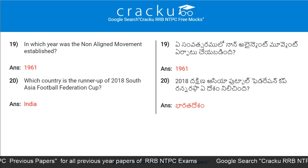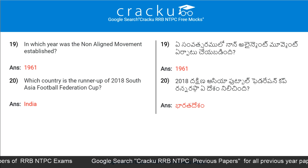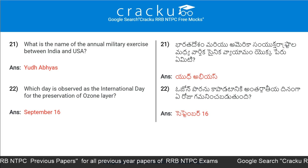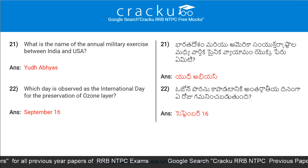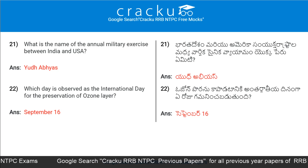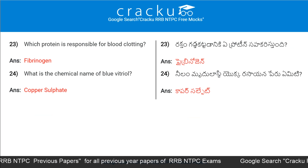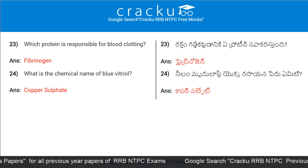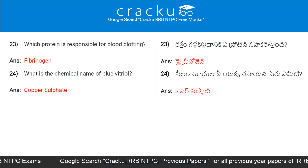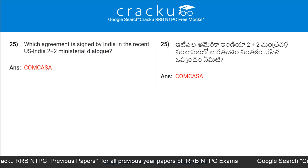In which year was the Non-Aligned Movement NAM established? 1961. Which country is the runner-up of the 2018 South Asia Football Federation Cup? India. What is the name of the annual military exercise between India and USA? Yudh Abhyas. Which day is observed as the International Day for the Preservation of the Ozone Layer? September 16. Which protein is responsible for blood clotting? Fibrinogen. What is the chemical name of blue vitriol? Copper Sulphate.